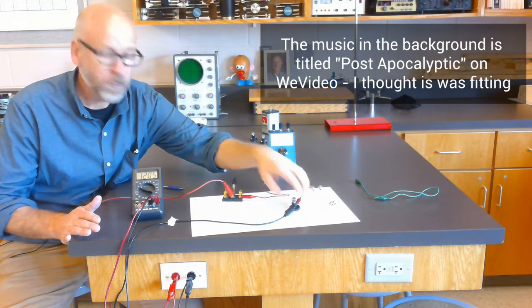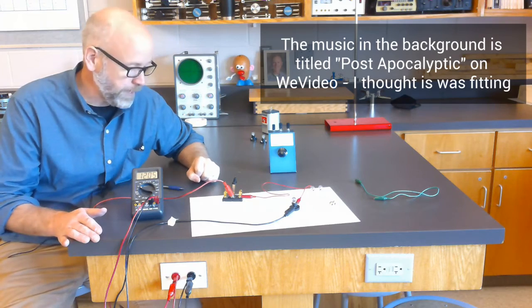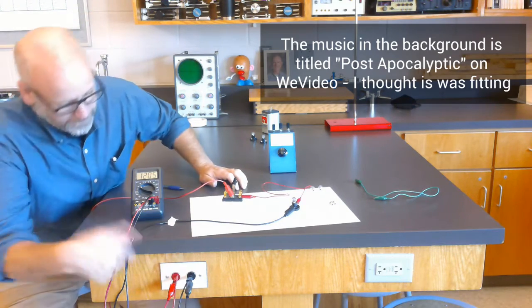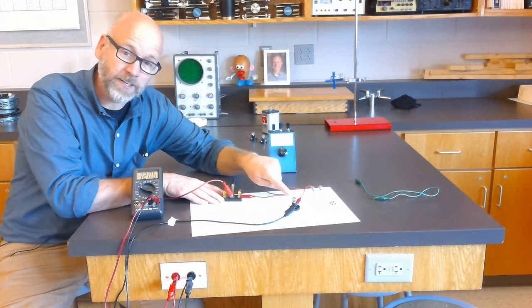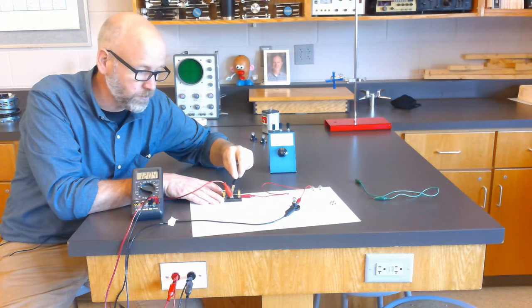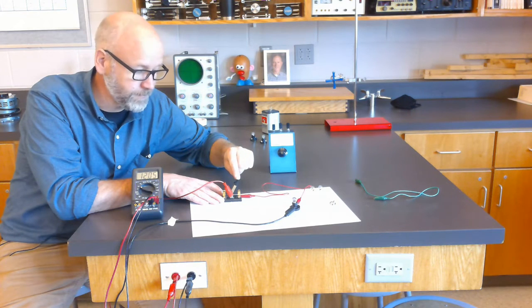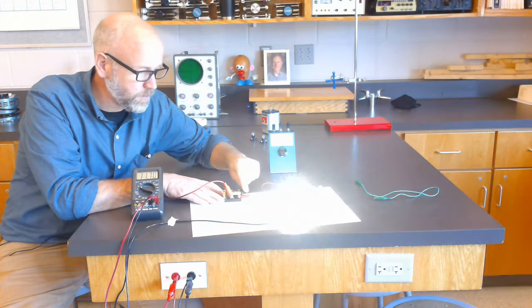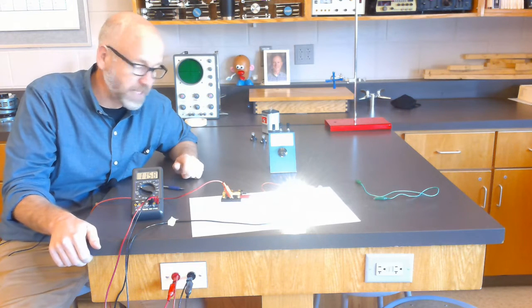As soon as I close that switch, electricity is going to flow through the light bulb, be converted into thermal energy and visible light, and then down to ground. So when I flip the switch, now this light bulb is only rated for six volts. So if I have 12 volts go across it, what do you expect to see happen?